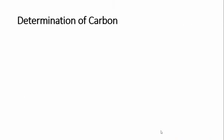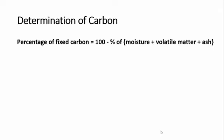The percentage of fixed carbon is very easy to calculate. Whatever is remaining is the carbon; therefore, 100 minus all the other contents — that is moisture, volatile matter, and ash — will give us the percentage of fixed carbon.